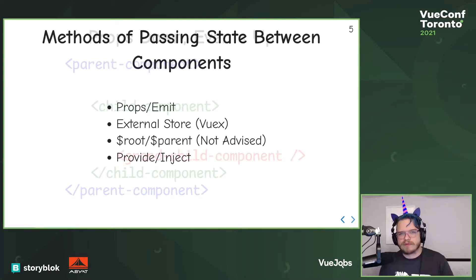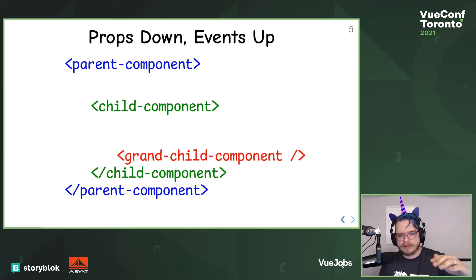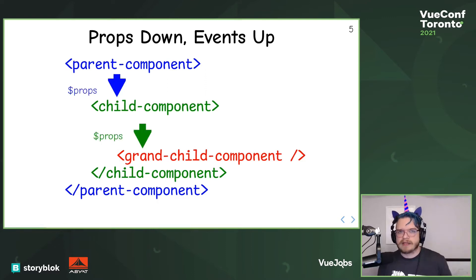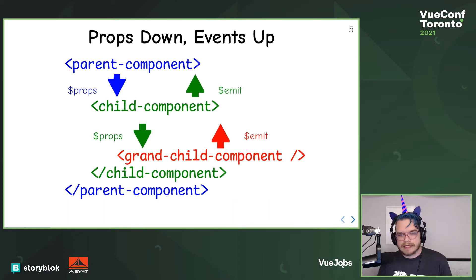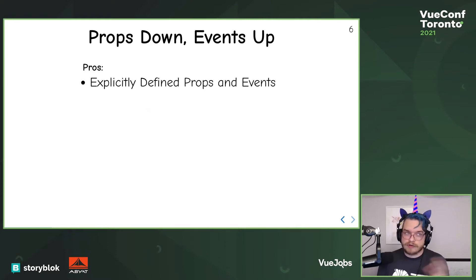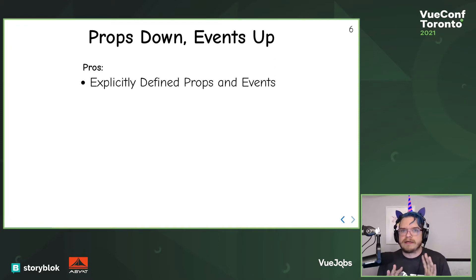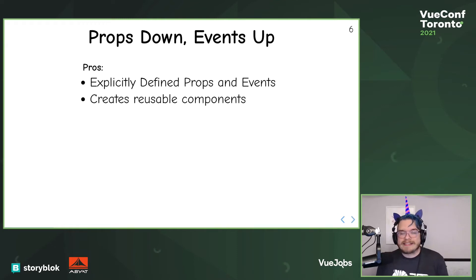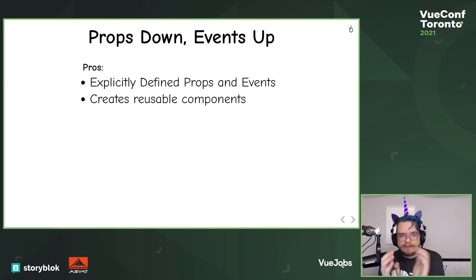Let's talk about props and emit. With props, we pass props from a parent component to a child component. And if we want to get data into the grandchild component, we'd go from the child component to the grandchild component. Similarly, if you want to get data out of the grandchild component to the parent component, we would emit events up. This is a fantastic way of doing things because it's explicitly defined what your props and events are.